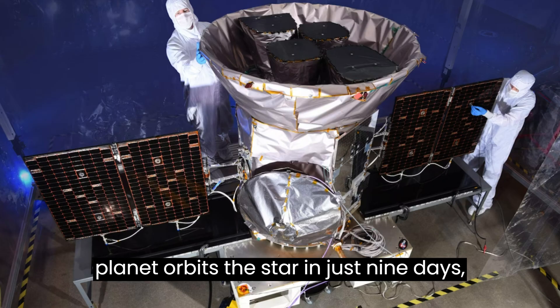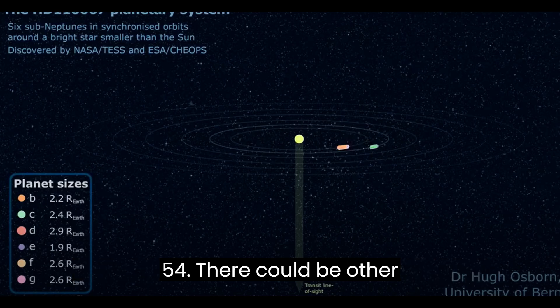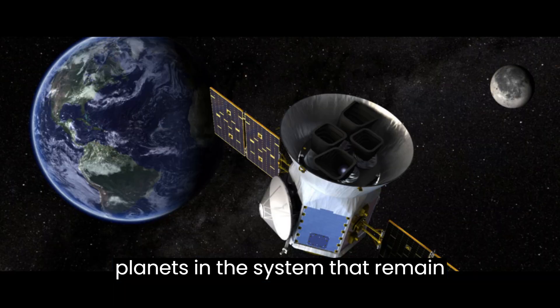The innermost planet orbits the star in just nine days, while the outermost makes that journey in 54. There could be other planets in the system that remain undetected.